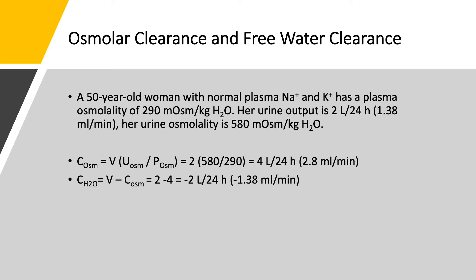Let's take an example. We have a 50-year-old woman with normal plasma sodium, normal plasma potassium, and a plasma osmolality of 290 mOsm/kg. Her urine output is 2 liters per 24 hours, or 1.38 mL/min — converting by dividing 2,000 mL by 1,440 minutes. Urine osmolality is 580 mOsm/kg. Osmolar clearance: 580 divided by 290 equals 2, multiplied by 2 liters equals 4 liters per 24 hours, or 2.8 mL/min. Free water clearance is therefore negative 2.